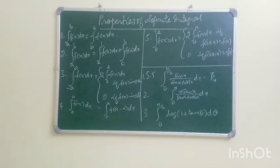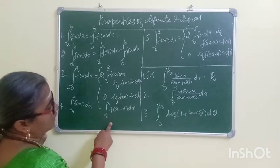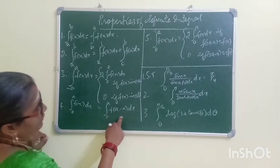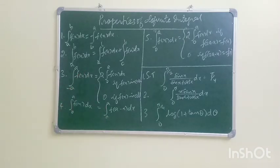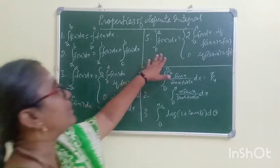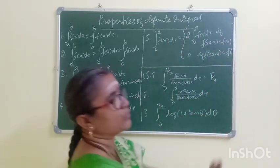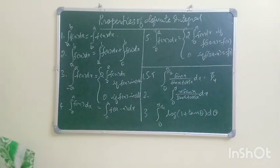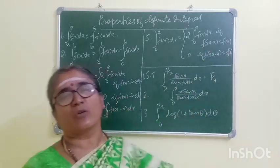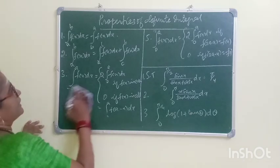The fourth property is: integral 0 to a, f(x) dx equals integral 0 to a, f(a minus x) dx. Now we have three properties. If we have minus a to a, it equals 2 integral 0 to a, provided f(2a minus x) equals f(x). If f(2a minus x) equals minus f(x), the result is zero.